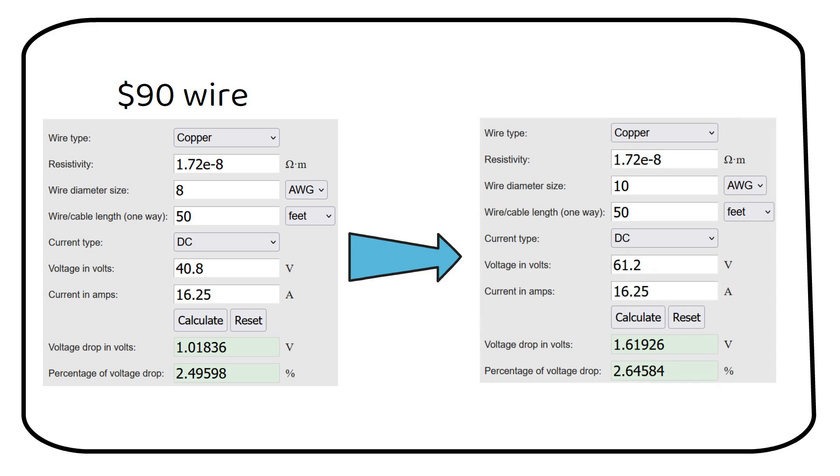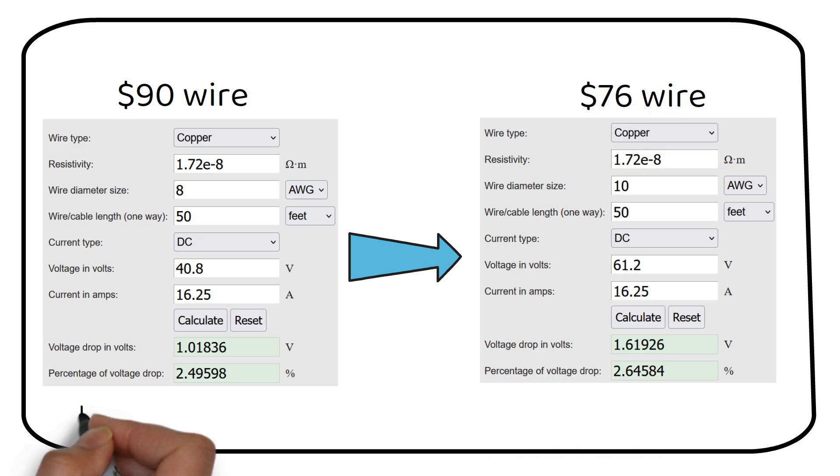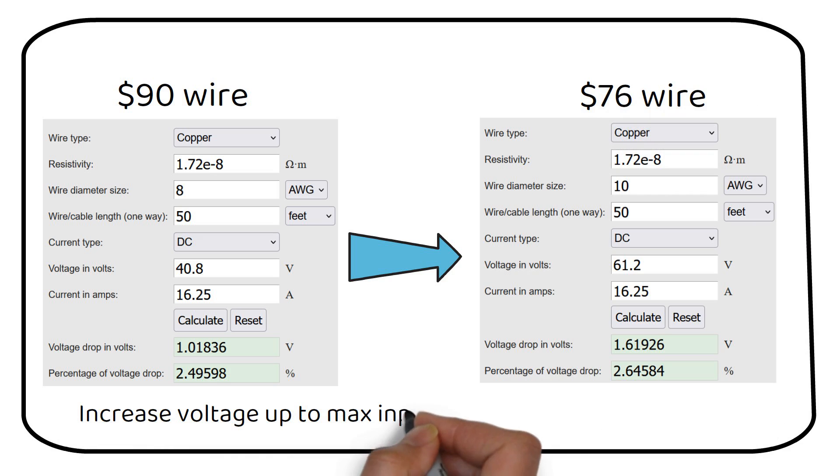That is one more panel in series per string. This increases the voltage of the series string to 61.2 volts, allowing a smaller, more affordable 10 gauge wire, which now costs $76. This exemplifies why more panels in series can be cost effective by reducing voltage drop and wire costs.